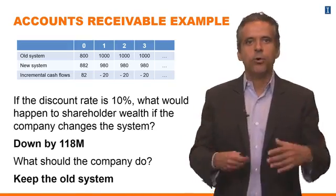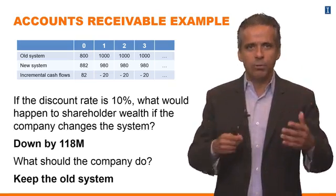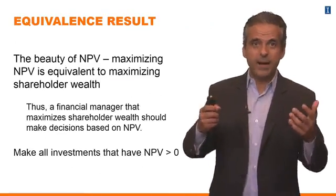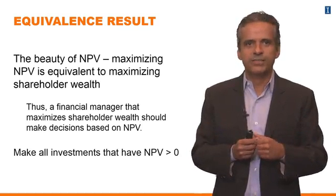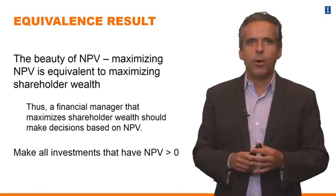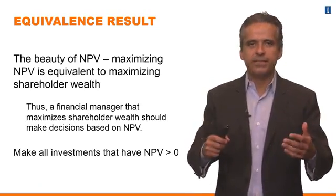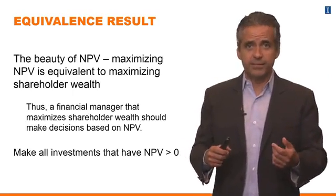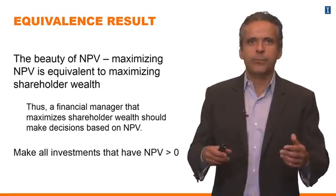So finally we know what to do. We call this the equivalence result in corporate finance — the fundamental notion that maximizing net present value is equivalent to maximizing shareholder wealth. If you want to make decisions that increase shareholder wealth, you take all investments that have positive net present value — NPV greater than zero — and those will increase shareholder wealth.